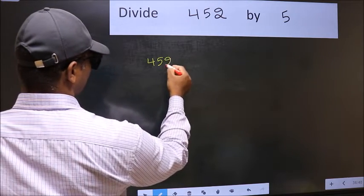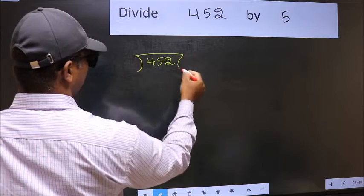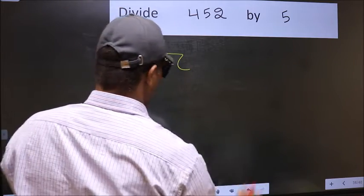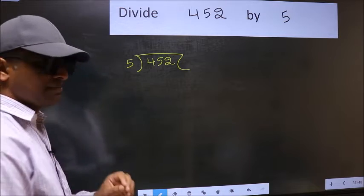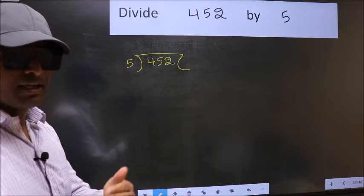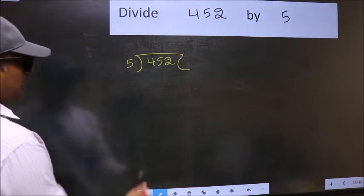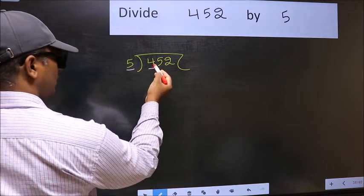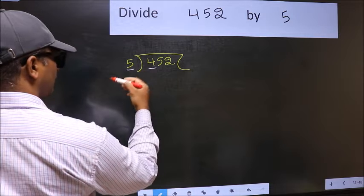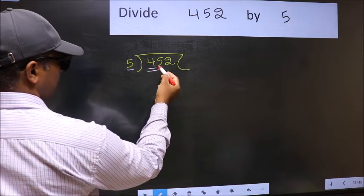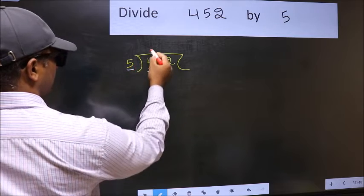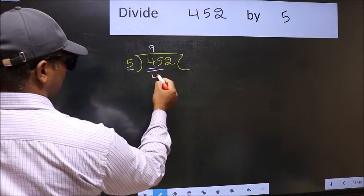452 and 5 here. This is your step 1. Next, here we have 4 and here 5. 4 is smaller than 5. So we should take two numbers, 45. When do we get 45 in 5 table? 5 nines 45.